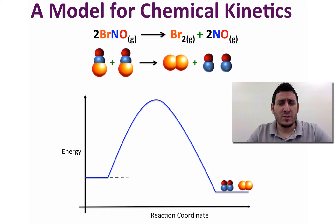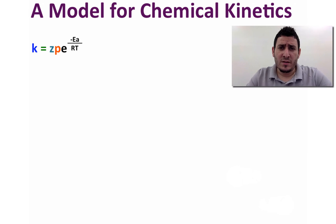The rate constant, taking into consideration the aforementioned factors, can be written as k equals z p exponential to minus Ea over RT, where z is the collision frequency and p is the steric factor. The term e to the power minus Ea over RT represents the fraction of collisions with enough energy to overcome the activation energy.